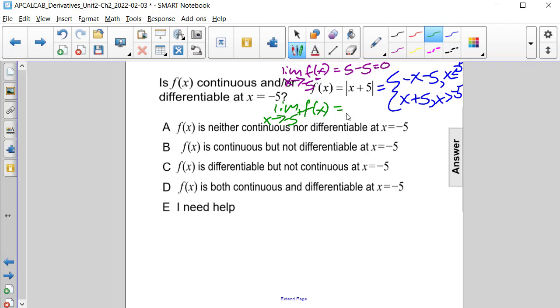That's equal to negative 5 plus 5, which is also 0. So these two are both the same. Therefore, f of x is continuous.